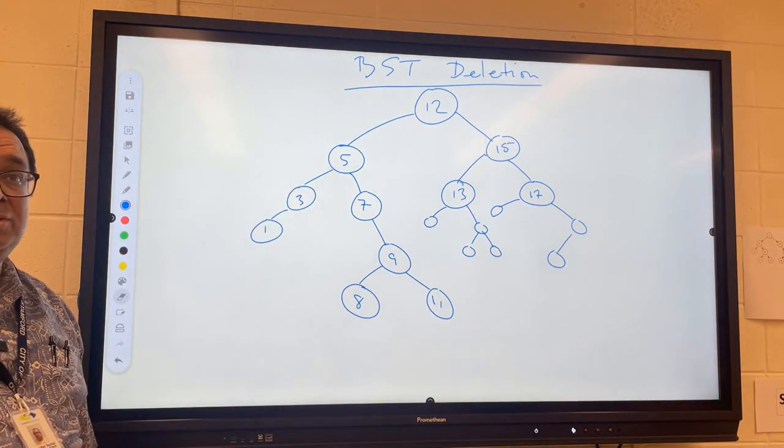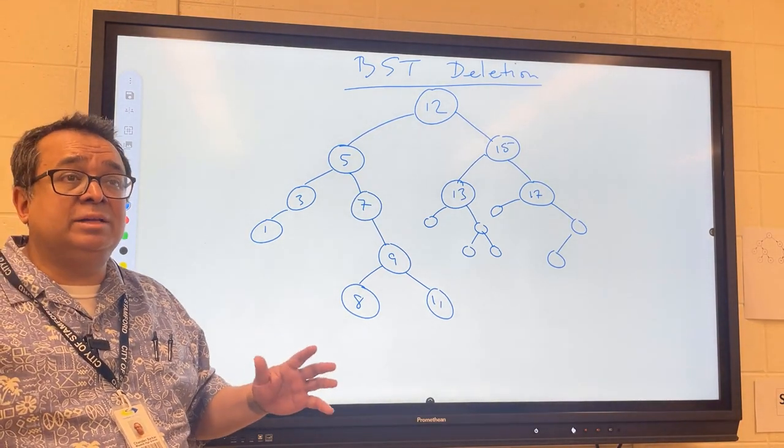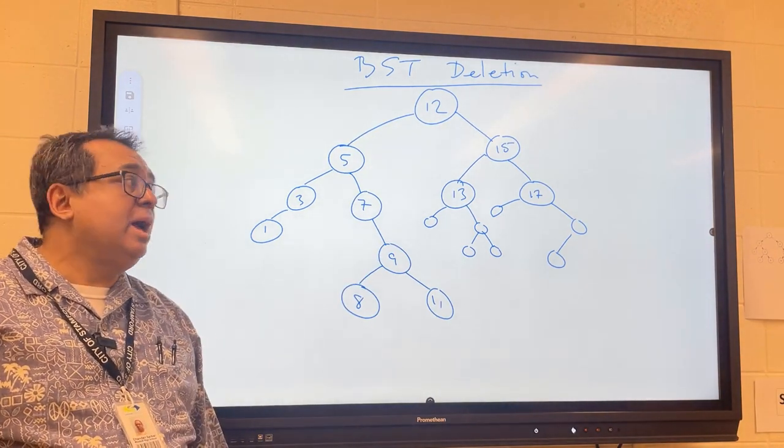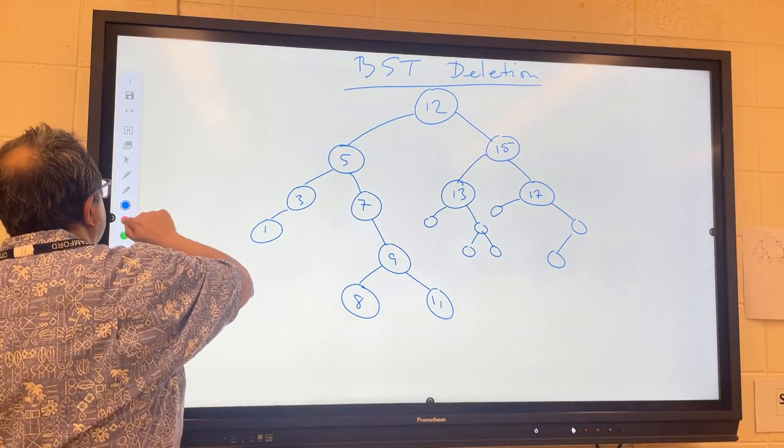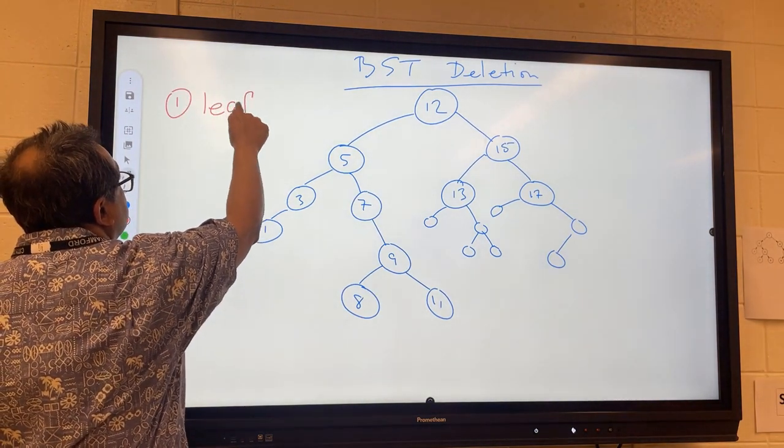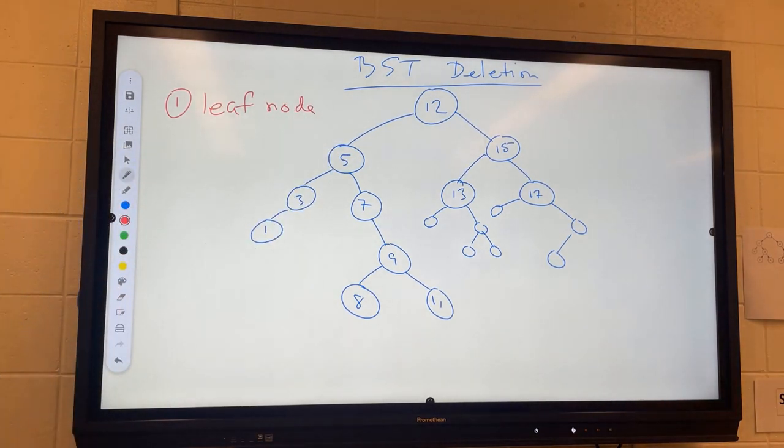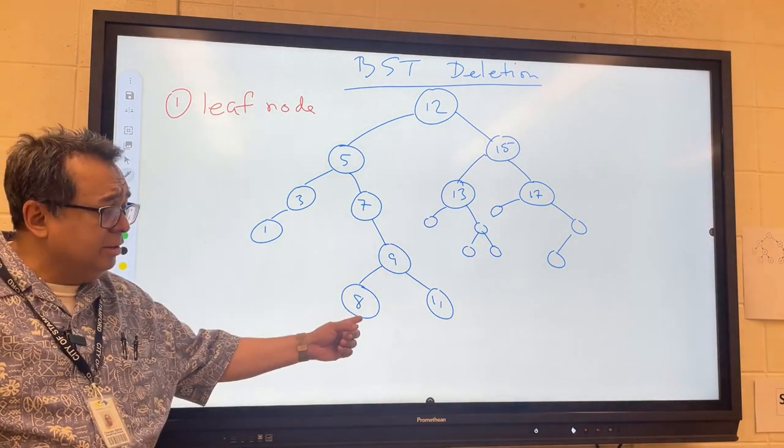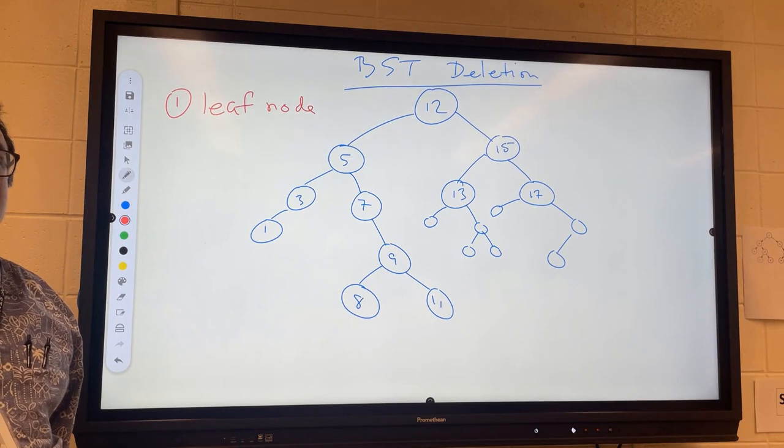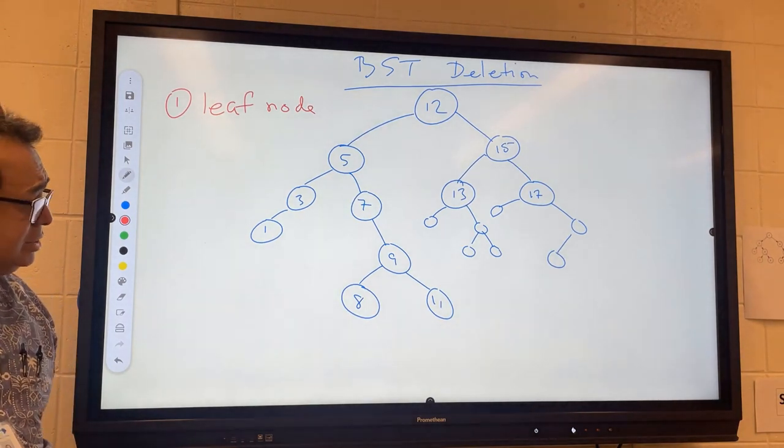We want to discuss three different cases, and then I'm going to show you how to deal with the third case, which is a lot harder than the first two cases. I want to first talk about the first case where we have a leaf node that we are going to delete. For example, I want to delete node number eight here. How difficult or easy would that be to do and what would the tree look like after I have deleted it?